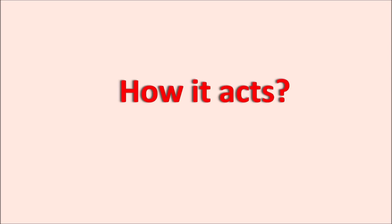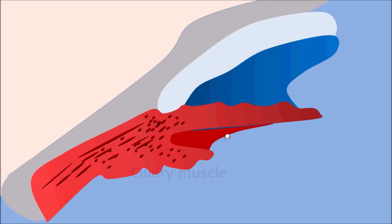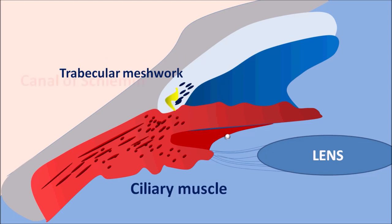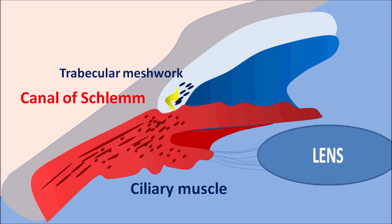Within the eye, the ciliary muscle connects with the lens through suspending ligaments. Under normal conditions, the ciliary muscle secretes aqueous humor, which is responsible for lubrication of the lens. This aqueous humor must be drained to control the pressure within the eye. The trabecular meshwork is connected with the canal of Schlemm, through which aqueous humor can be drained out of the eye. Under normal conditions, aqueous humor drains through the canal of Schlemm, but when the lens bulges, the iris may move and potentially block this drainage.